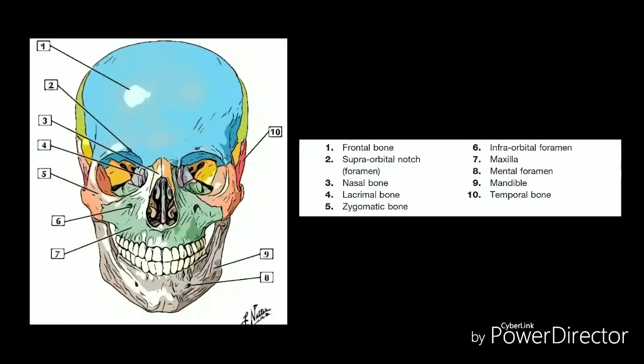Finally, the mandible forms the lower jaw of the skull. The joint between the mandible and the temporal bones of the neurocranium, known as the temporomandibular joint, forms the only non-sutured joint in the skull.